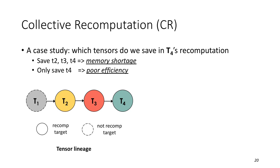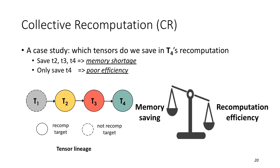Here, the question is, which tensor do we save in T4's recomputation? If we save all the three tensors, we may get memory shortage and fall back to on-demand swapping. On the other side, if we only save T4, then T2 and T3's recomputation will repeat some computation which leads to poor efficiency. This is essentially a trade-off between memory saving and recomputation efficiency. However, it's difficult to make the decision before execution as we don't know how much free memory is available to keep multiple recomputation targets. This problem can leave runtime to figure out.